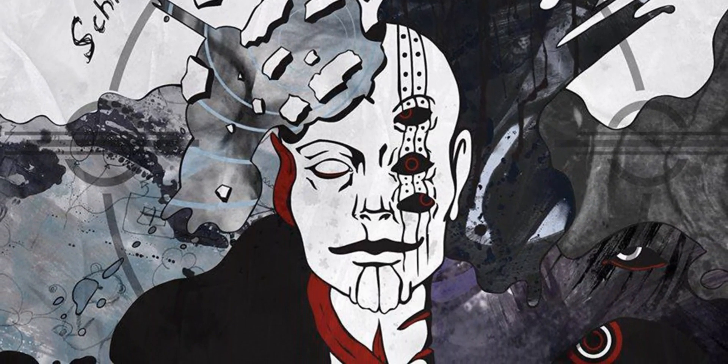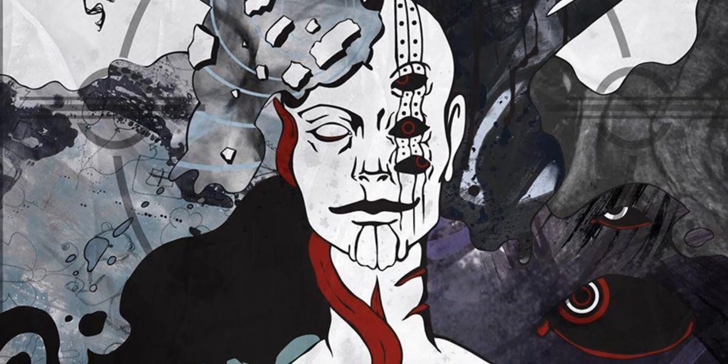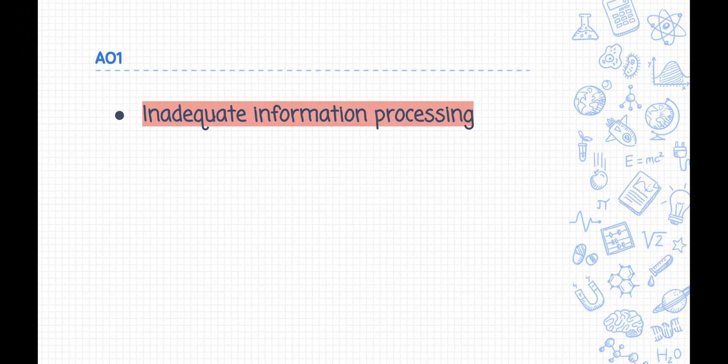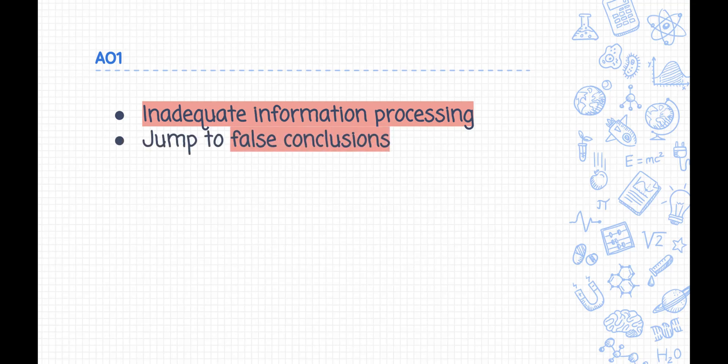Delusions are explained by cognitive biases. In other words, they are caused by inadequate information processing. Patients with schizophrenia are often unable to recognize these cognitive distortions, i.e., when their processing of events is incorrect. Here are some examples: people tend to perceive themselves as the central component in events